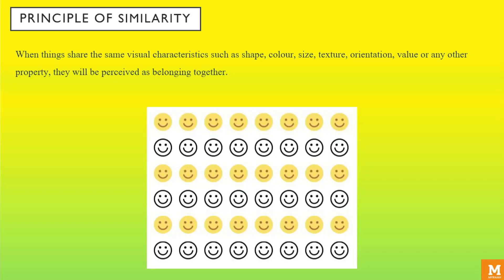The principle of similarity. This principle is grounded in the ideology that when things share similar visual characteristics such as shape, color, size, texture, orientation, value, or any other property, they will be perceived as a group. For example, in the image given below, even though all the symbols are the same, each row is perceived as a distinct group.